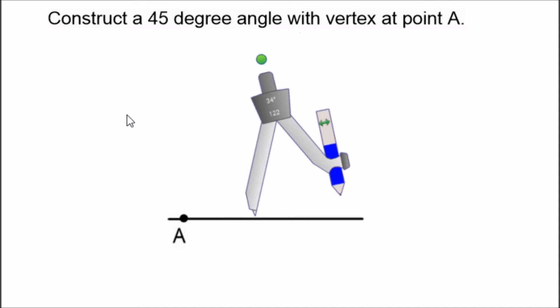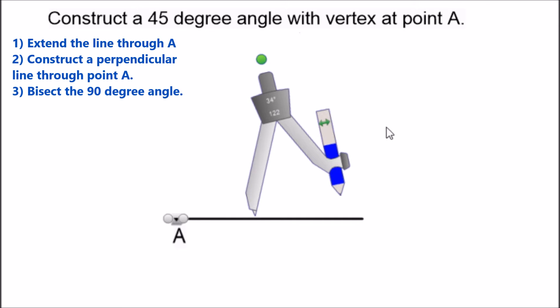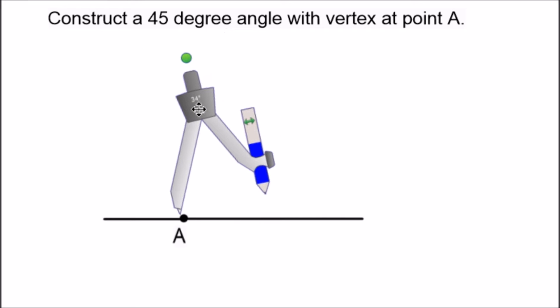We're starting off with this line segment here and we have point A. So the first thing we want to do if we follow these steps is to extend our line segment. Now use a ruler or straight edge to just extend your line so we have space to construct a perpendicular line through point A.